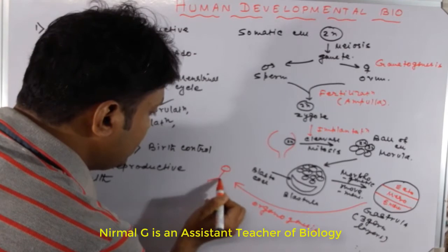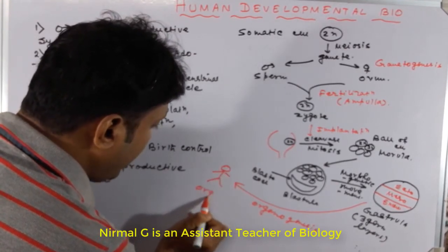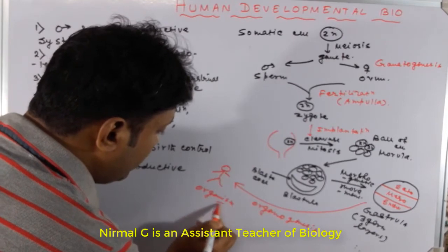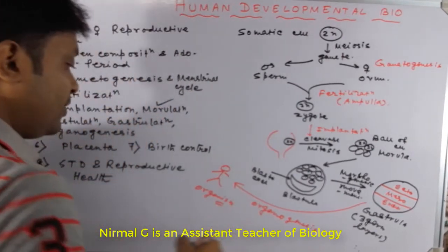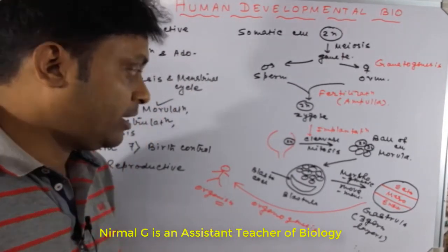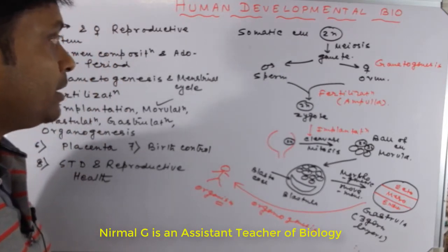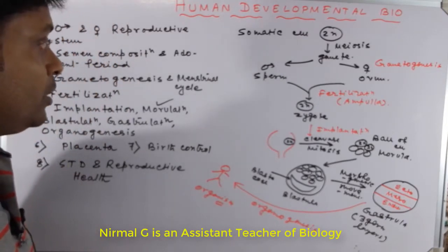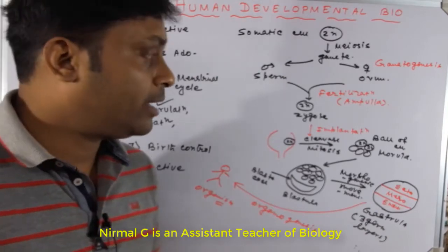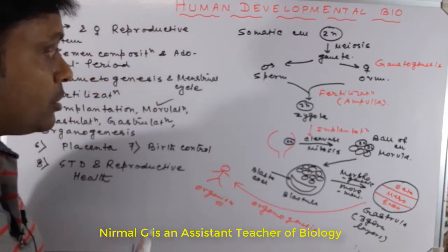From these three germ layers — ectoderm, mesoderm, and endoderm — organogenesis occurs, and by the process of organogenesis an organism is developed. This is the basic step of developmental biology.